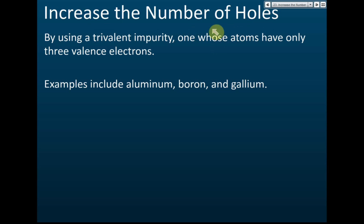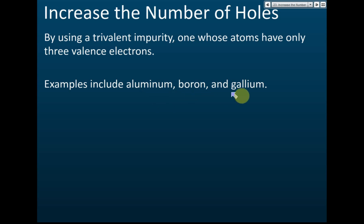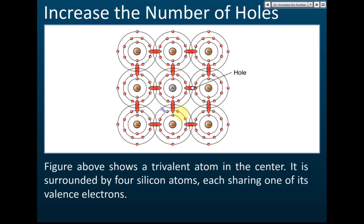To increase the number of holes, we must use trivalent impurities — atoms that have three valence electrons. Examples of trivalent atoms are aluminium, boron, or gallium. If you dope trivalent atoms, they have only three valence electrons, so they can only form three covalent bonds. The fourth covalent bond cannot be formed because the trivalent atom is lacking one electron.